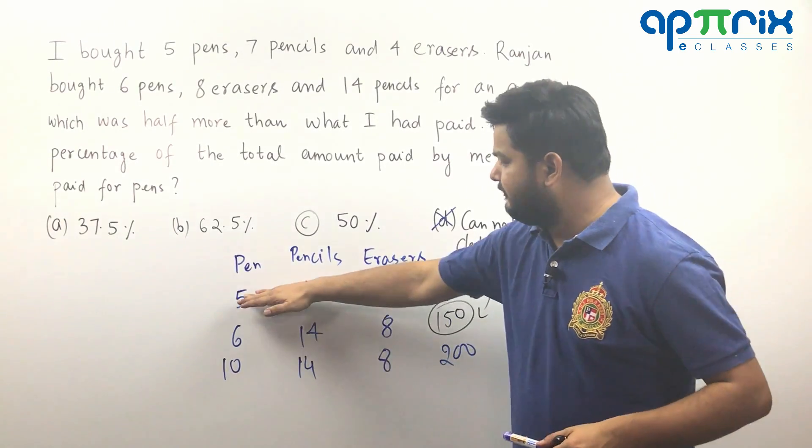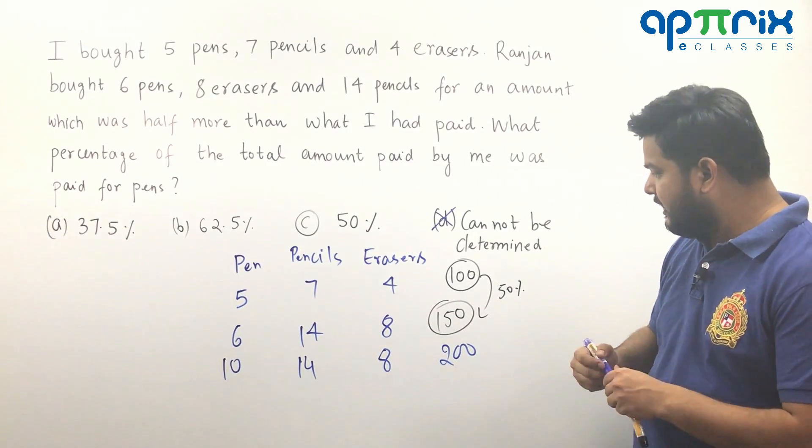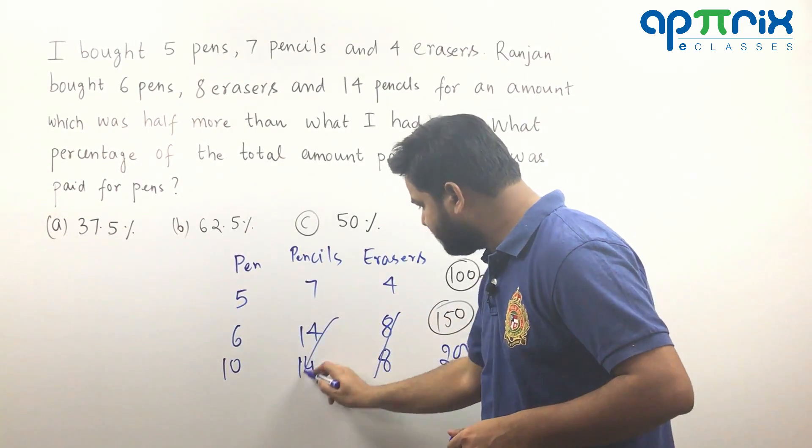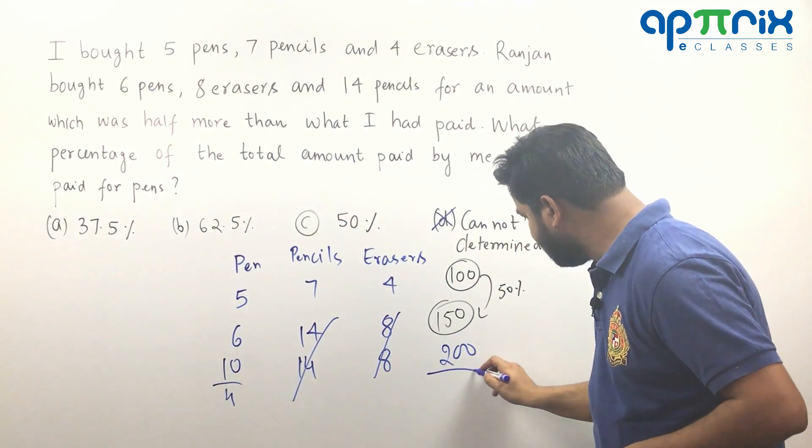5, 7, 4 I'm doubling it. 10, 14, 8. And I am getting how much? 200. Now you can clearly see this and this will be cancelled out. Here the difference will be 4 and this 4 will correspond to how much? This difference, that is 50. That means 4 pens cost is how much? 50.